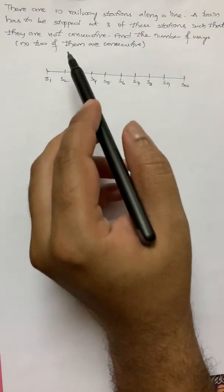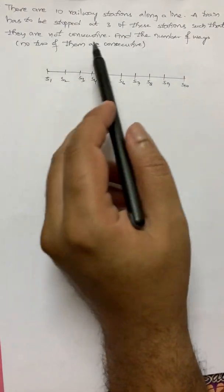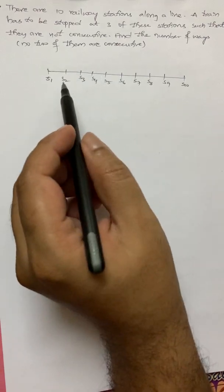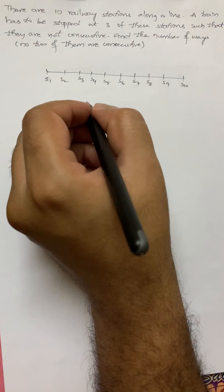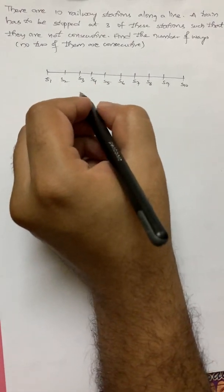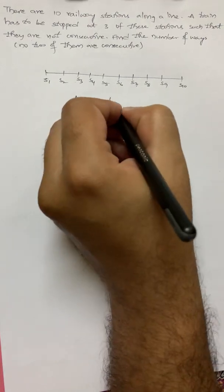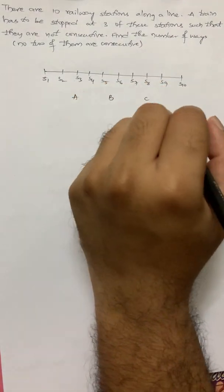We have to select four stations, I mean three stations such that no two are consecutive. Let us say I will select three stations. If I select three stations, let us say A, B, C is the way in which I am selecting the stations.